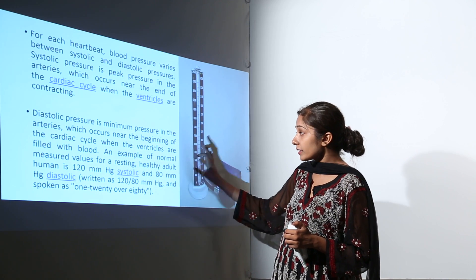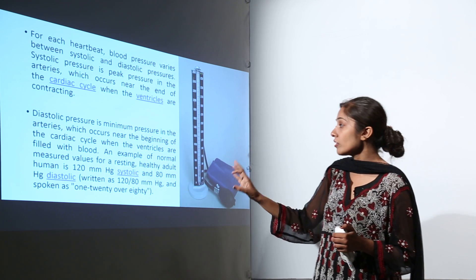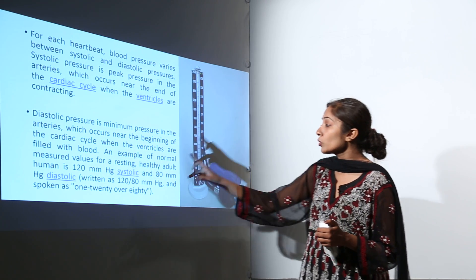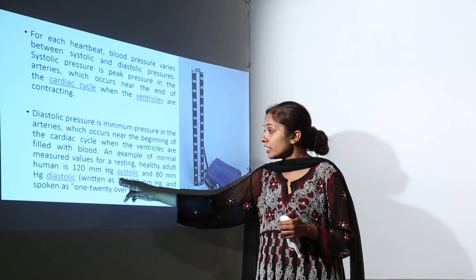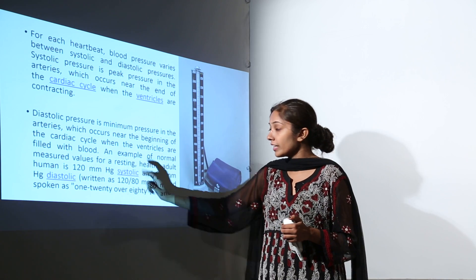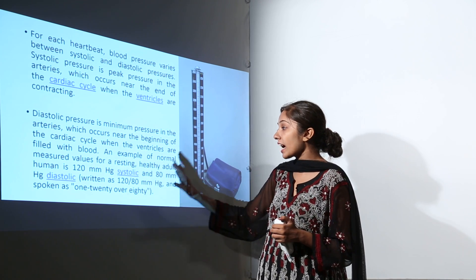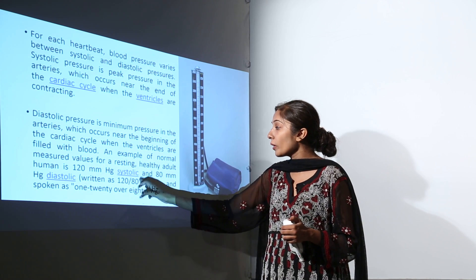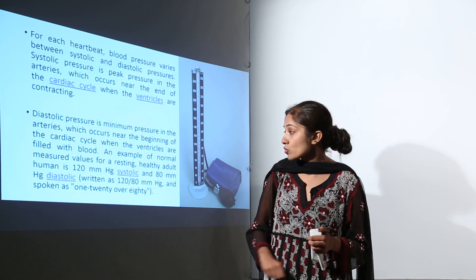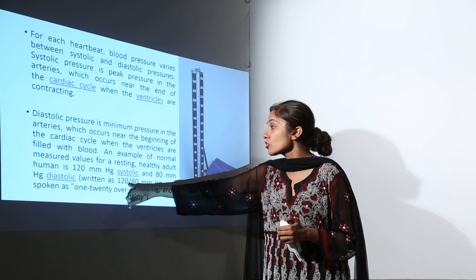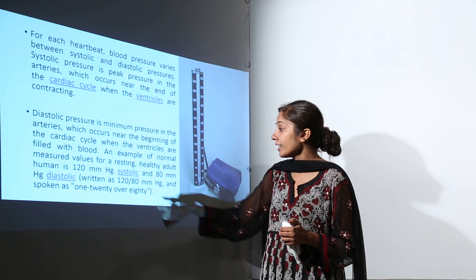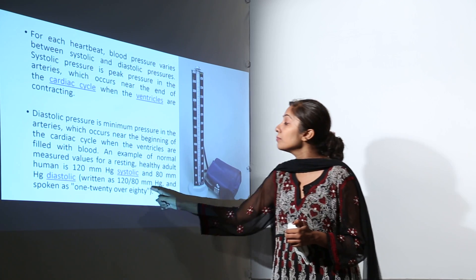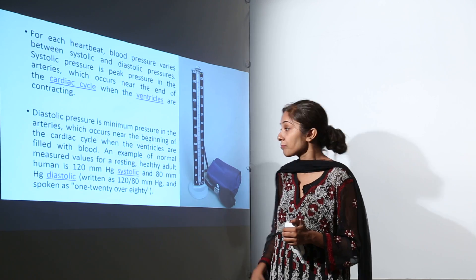An example of normal measured values for a resting healthy adult human is 120 mmHg for systolic and 80 mmHg for diastolic. It is read as 120 over 80 — 120 is the systolic value and 80 is the diastolic value. This is the normal blood pressure or normal BP.